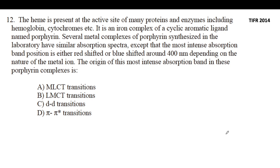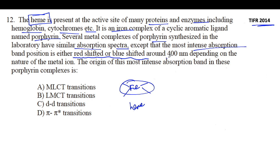Here is a good one. TIFR's specialty is to give lengthy questions but the answers are very simple. TIFR 2014: The heme is present at the active site of many proteins and enzymes including hemoglobin, cytochromes, etc. Here we are talking about the heme group, an iron complex of a cyclic aromatic ligand named porphyrin. When the porphyrin is having the iron, it is called the heme group. Several metal complexes of porphyrin synthesized in the laboratory have similar absorption spectra except that the most intense absorption band position is either red shifted or blue shifted around 400 nanometer depending on the nature of the metal ion.